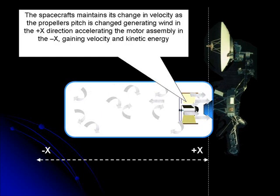The spacecraft maintains its change in velocity, even as the propeller pitch is changed, generating wind in the plus X direction, accelerating the motor assembly in the minus X direction, gaining velocity and kinetic energy.